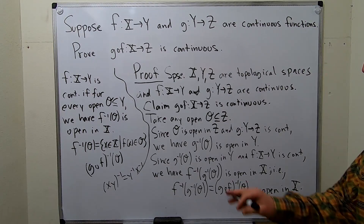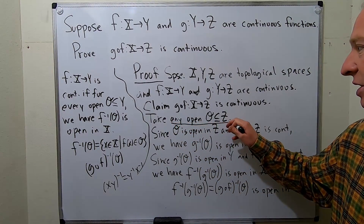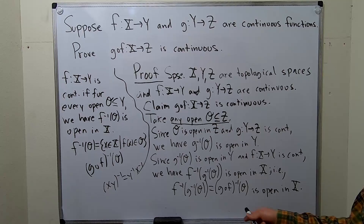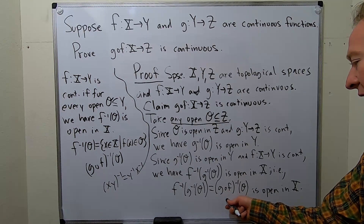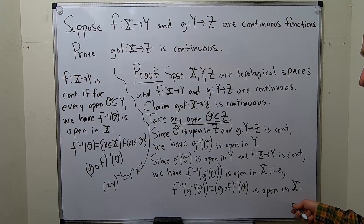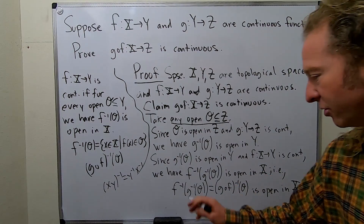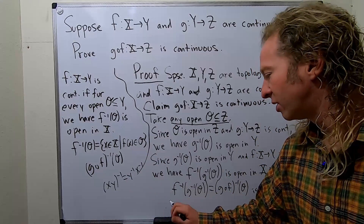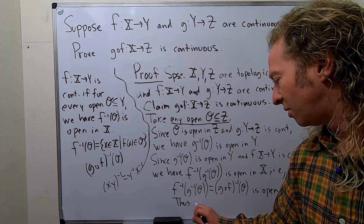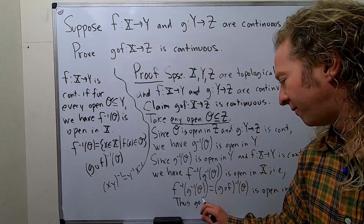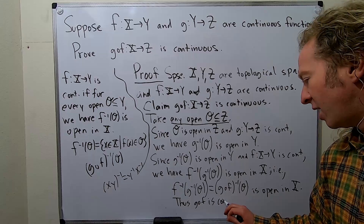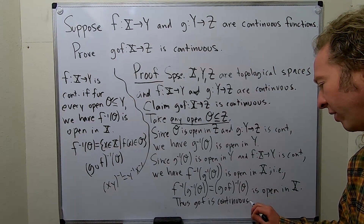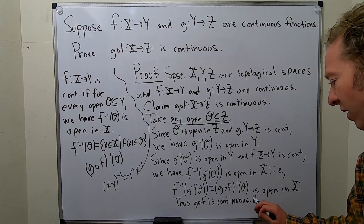We started with an open subset O of z, which is the codomain of g∘f, and we showed that (g∘f)⁻¹(O) is open in x. This is precisely the assertion that g∘f is continuous. Thus, g∘f is continuous, and that completes the proof.